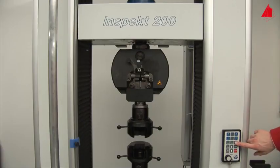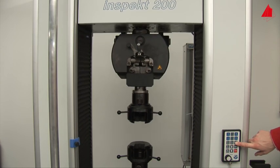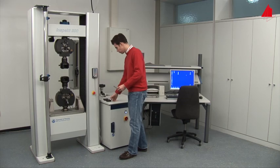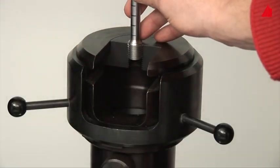Using a hand control, the tester moves the upper cross head into its correct starting position. Now he can place the threaded ends of the test piece in the lower and upper grips of the testing machine.